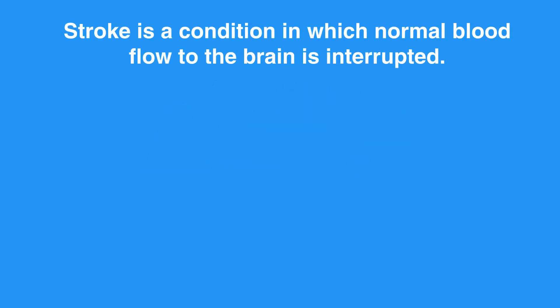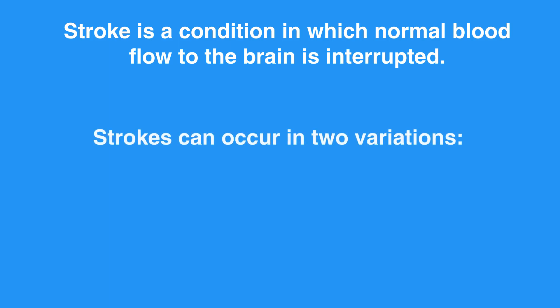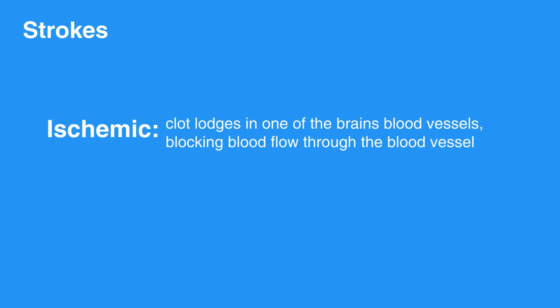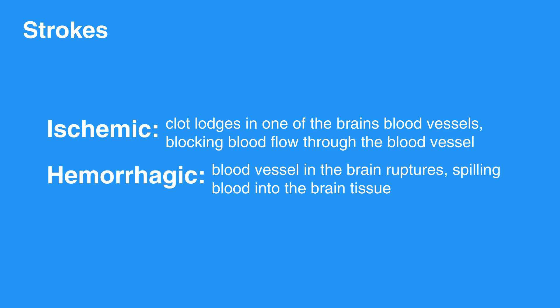Stroke is a condition in which normal blood flow to the brain is interrupted. Strokes can occur in two variations: ischemic and hemorrhagic. In ischemic stroke, a clot lodges in one of the brain's blood vessels, blocking blood flow through the blood vessel. In hemorrhagic stroke, a blood vessel in the brain ruptures, spilling blood into the brain tissue.